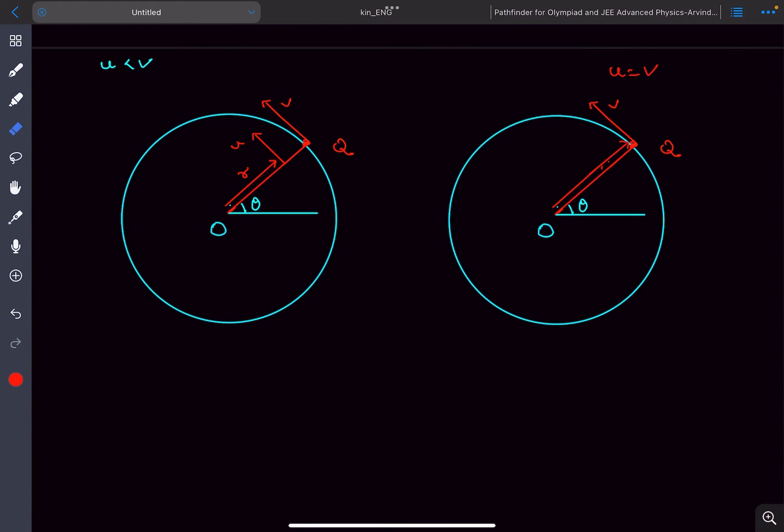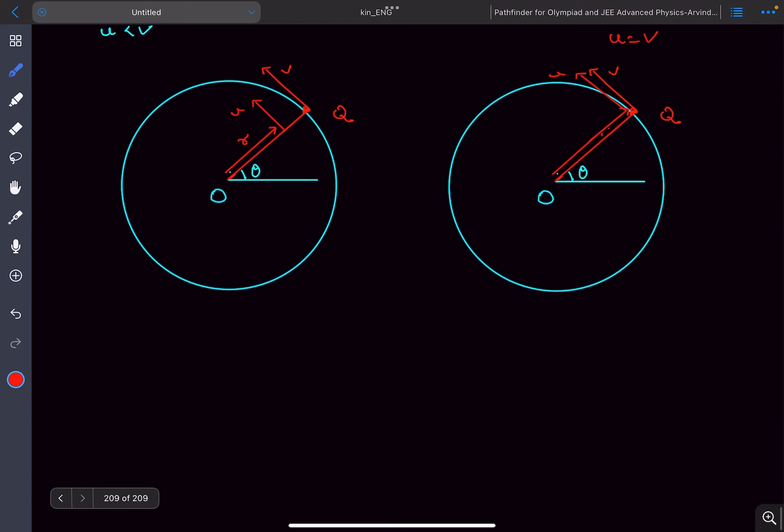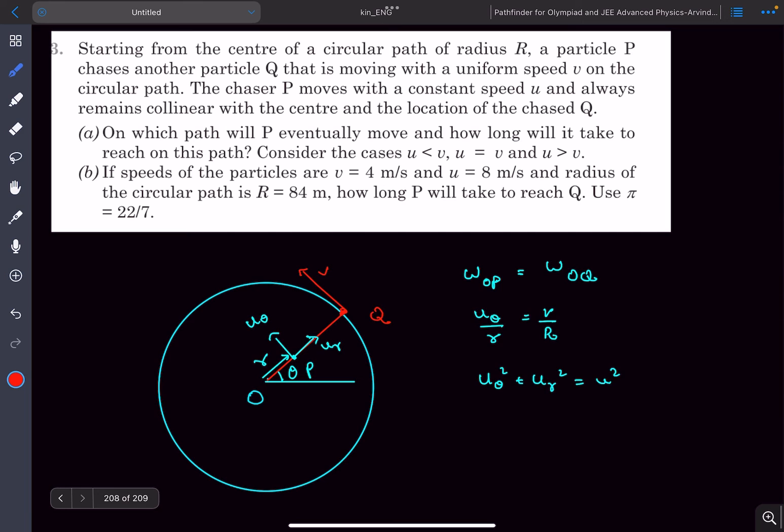In the u equals v case, both of them would finally move along the same circle. Similarly, for u greater than v case, particle P will move in a circle that is concentric with Q, but the radius is going to be greater than R. So that was the answer to the first problem. Finally they will move in a circle, but the radius of the circle will depend on the value of u that we choose.